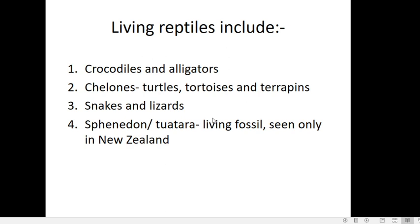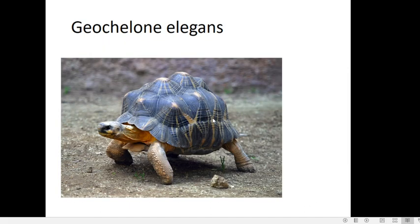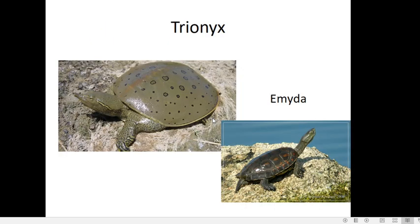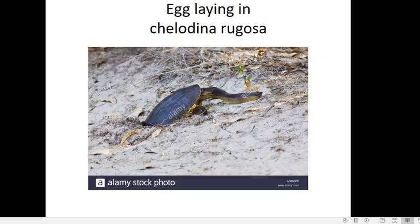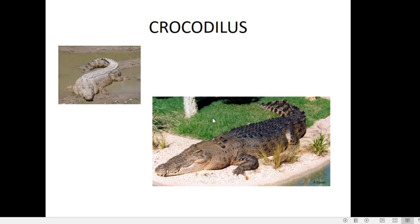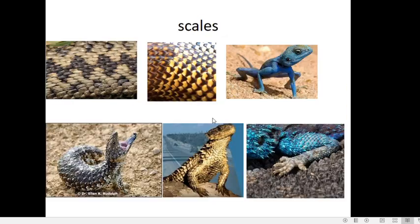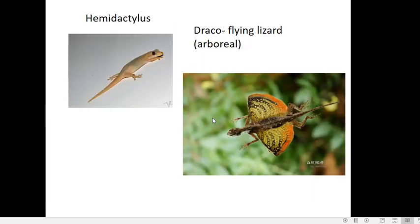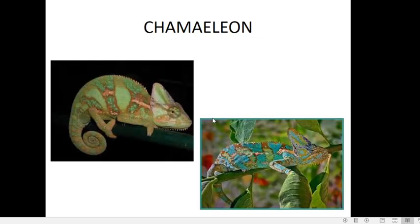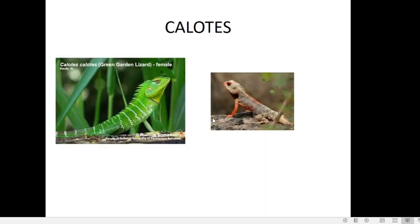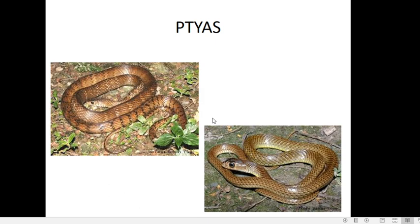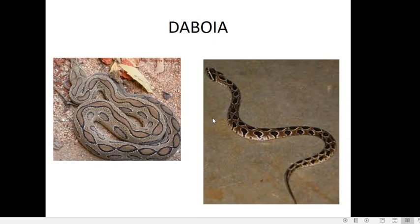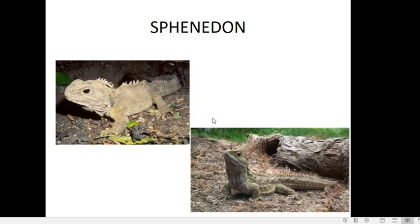We can get familiarized with some organisms through pictures: a green turtle, Geochelone elegans or star tortoise, Trionyx terrapins, and turtles with egg laying shown. Crocodiles, gavials, and alligators with visible scales and different types of modified scales. Then Hemidactylus, the flying lizard, marine reptiles, chameleon showing camouflage, Calotes or the garden lizard, desert lizards, snakes, Naja, Daboia — poisonous snakes — Bungarus, and finally Sphenodon.